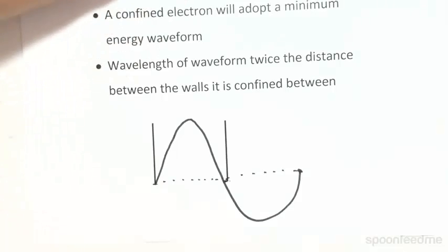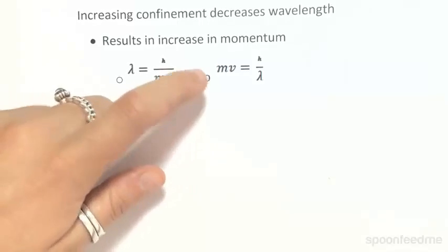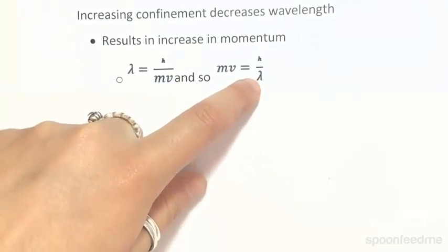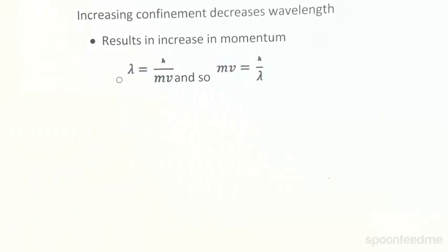Increasing confinement is going to decrease our wavelength, and this will result in an increase in momentum. This is because our wavelength is equal to Planck's constant divided by mass times velocity, which we know is momentum. So momentum is equal to a constant divided by the wavelength. Decreasing the wavelength — decreasing the denominator — results in an overall larger value for momentum.